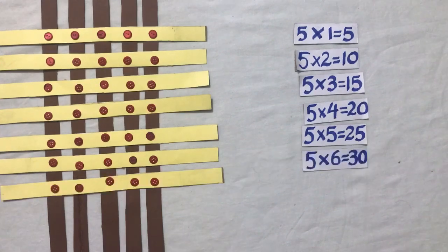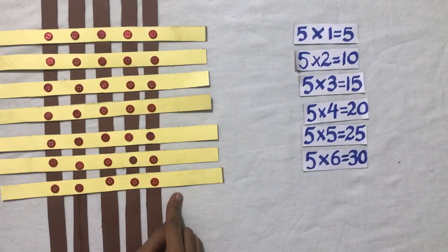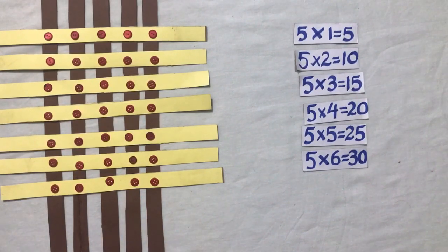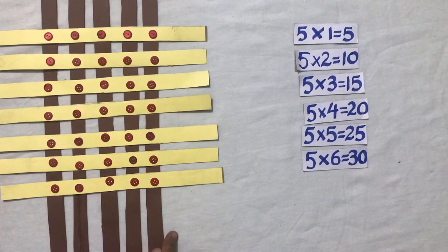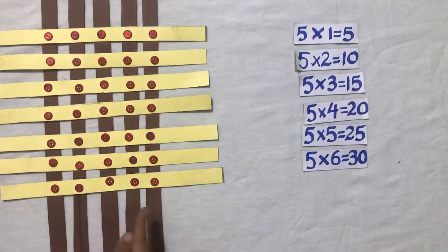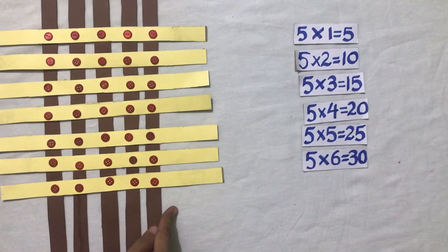I have placed another horizontal strip over these vertical strips. Now tell me the number of vertical strips. Yes, they are five. And tell me the number of horizontal strips. Yes, they are seven. And intersecting points are thirty-five.